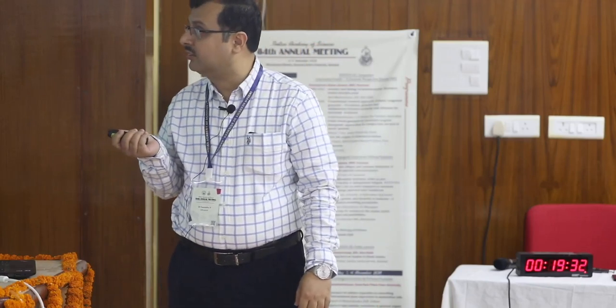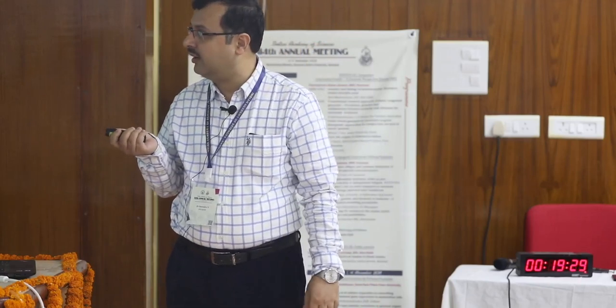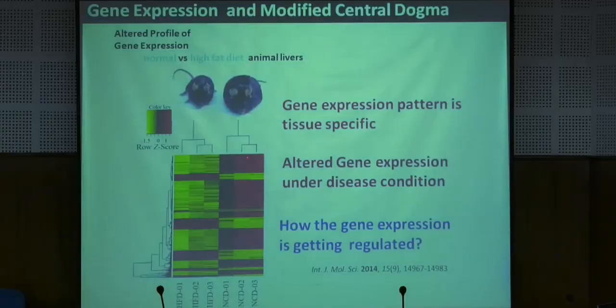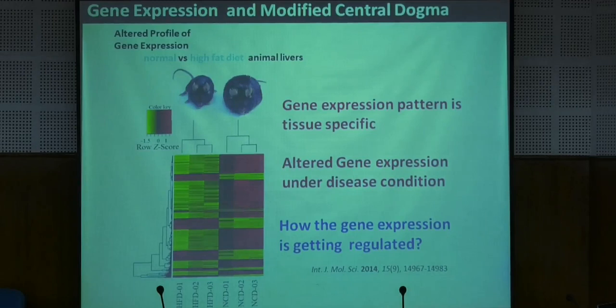If you analyze the gene expression of those mice livers on an array, each line represents one gene — red means high expression, green means low expression — and you can see the difference between the two sets of mice where they are exposed to different diets. That means gene expression can be controlled by different things, including the environment and food habits, and altered gene expression under disease condition is of course observed.